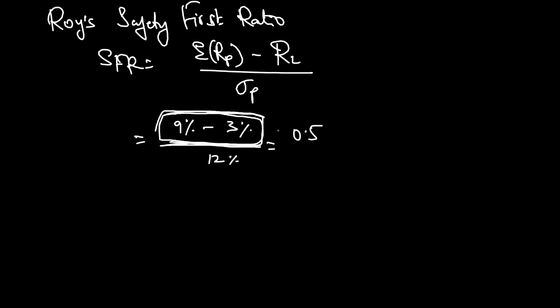The client is giving a target that the return should be more than a certain limit. That limit might be 0%, because he expects only positive returns, or it might be more than the risk-free rate. Here, the client is expecting more than 3%, so 3% is the threshold level. In comparison to the client's expectation, how much extra can the portfolio give based on the risk it is taking? For each unit of risk, this portfolio is giving 0.5% extra return.